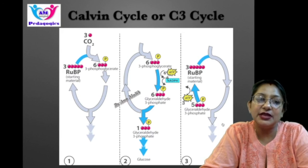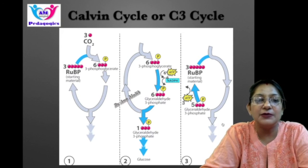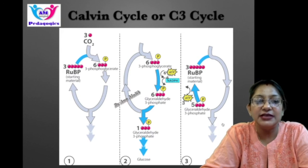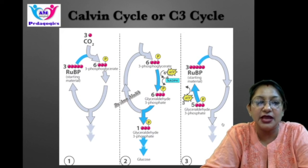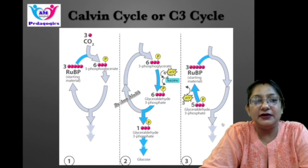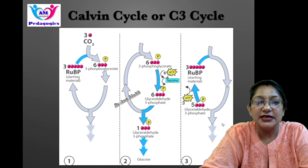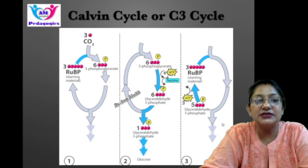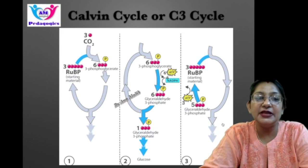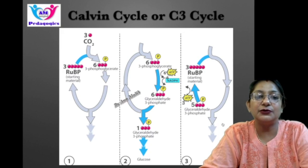The second stage of the Calvin cycle is reduction. The three PGA molecules created through carbon fixation are converted into molecules of simple sugar glucose. In this stage, energy is produced in the form of ATP and NADPH during the light-dependent reactions of photosynthesis. The Calvin cycle is a pathway in which plants convert sunlight energy into long-term storage molecules such as sugars, and energy from ATP and NADPH is transferred to those sugars.